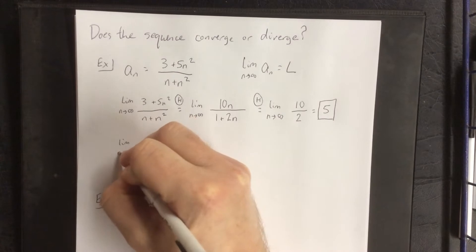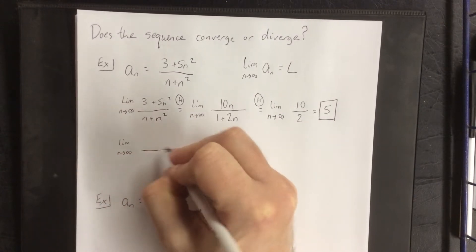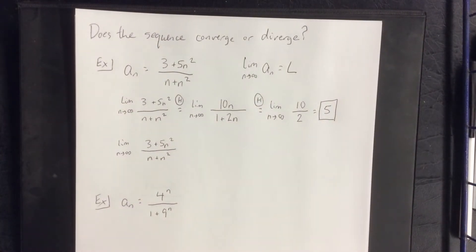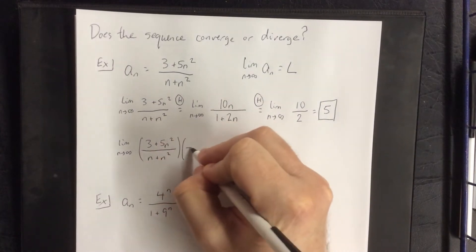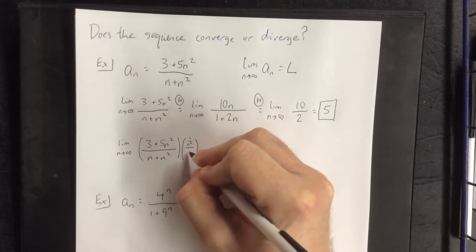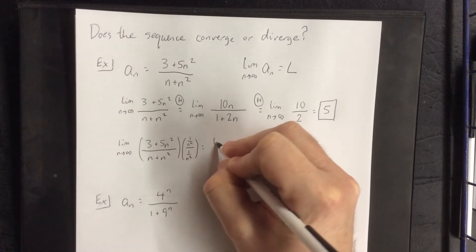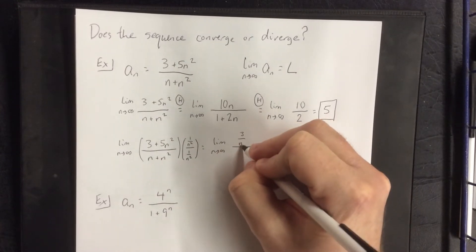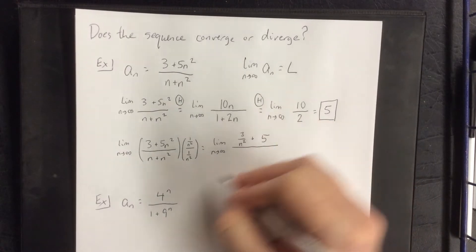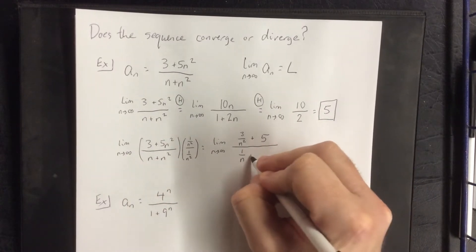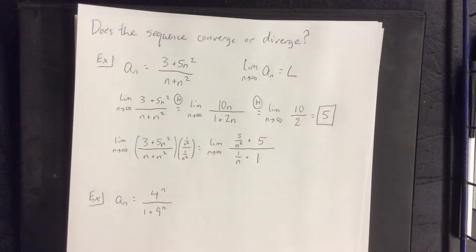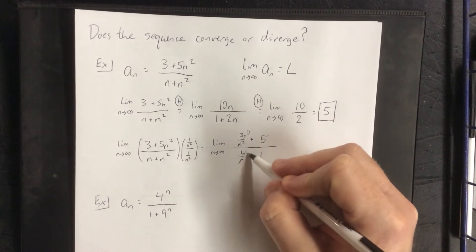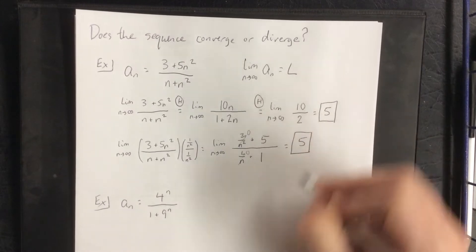The alternative approach — and this will be relevant going forward — is to find the largest power of n in the denominator and divide top and bottom by that, which is n². Distributing through every term: the numerator gives 3/n² + 5n²/n² = 3/n² + 5. The denominator gives n/n² + n²/n² = 1/n + 1. As n goes to infinity, anything with n in the denominator goes to 0, leaving us with 5/1, which is again 5.